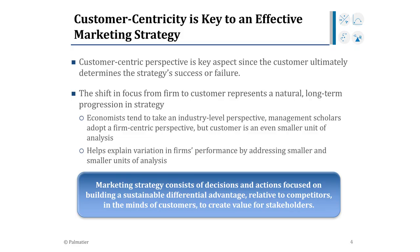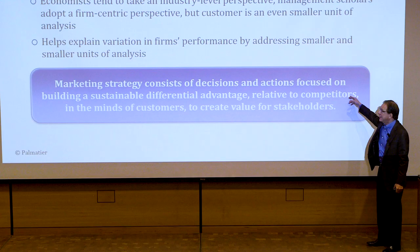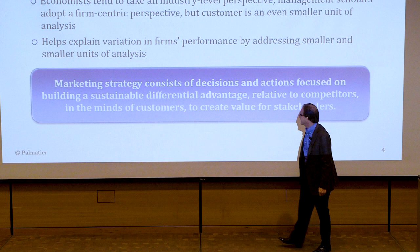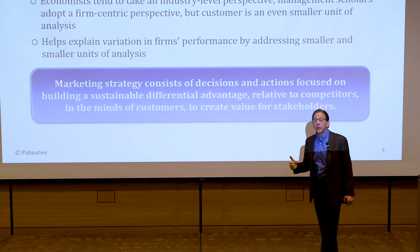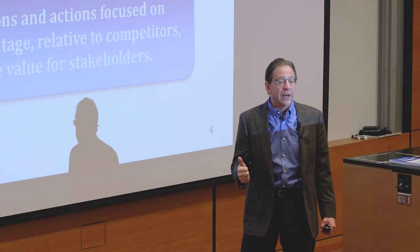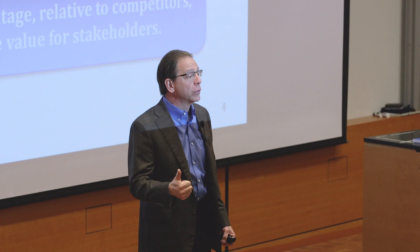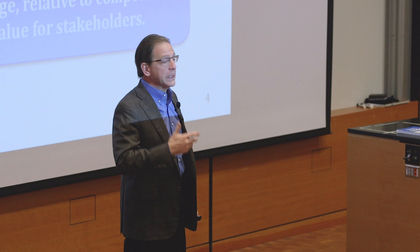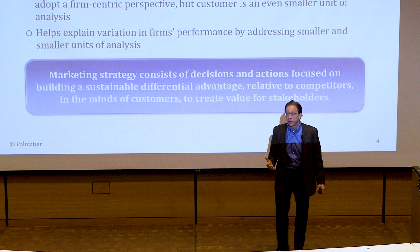The definition we use throughout the textbook: marketing strategy consists of decisions and actions focused on building a sustainable differential advantage relative to competitors — in the minds of customers — to create value for all stakeholders. Stakeholders include the customer, the firm selling the product or service, and also society, employees, and other stakeholders. We recognize multiple stakeholders in this definition.